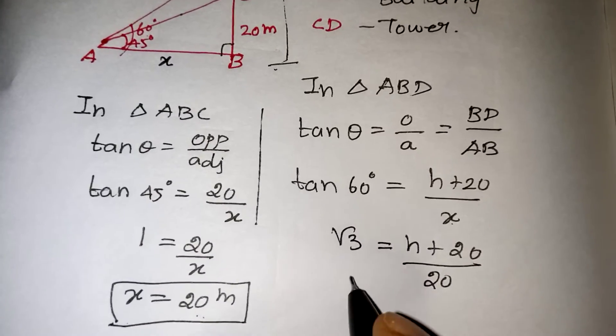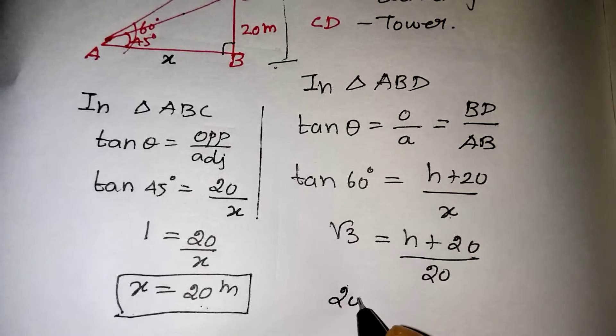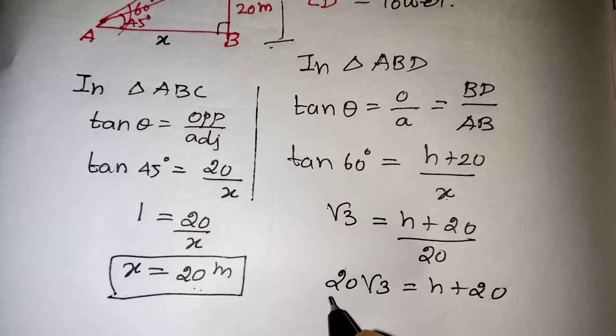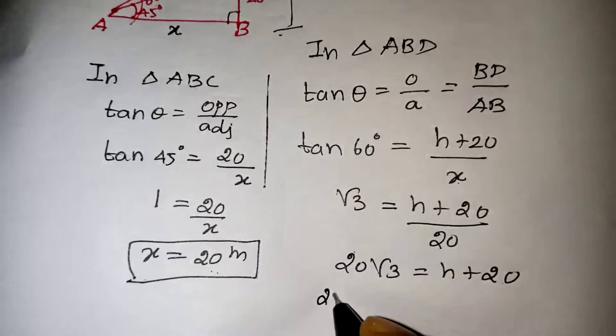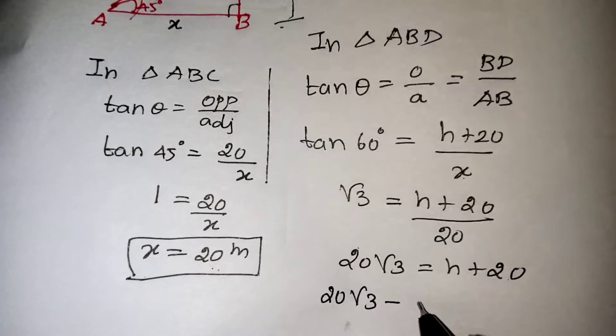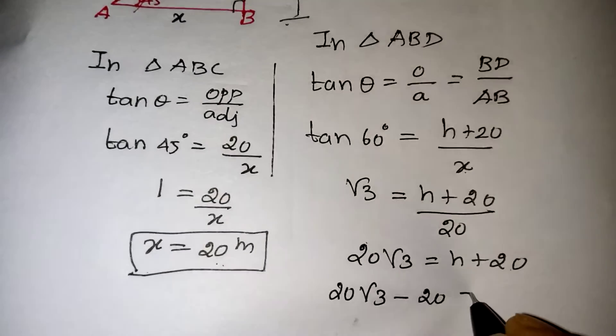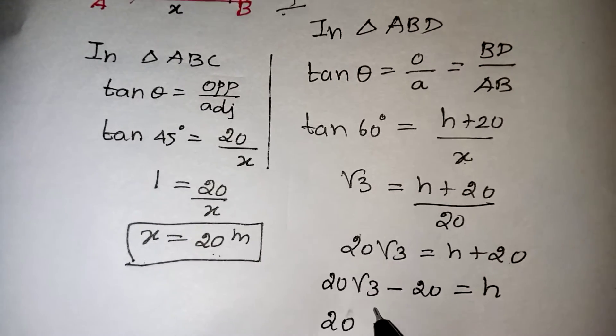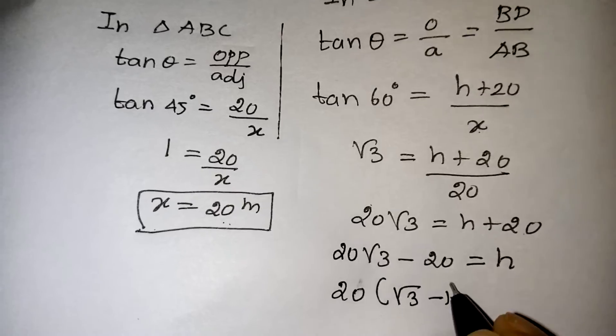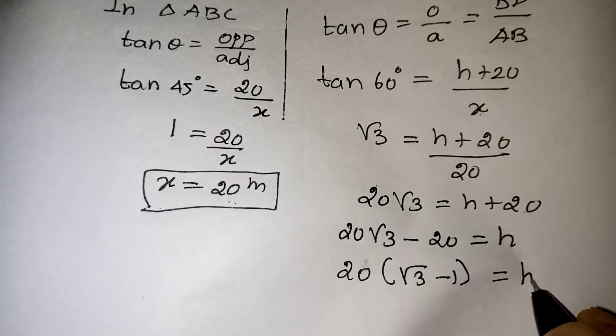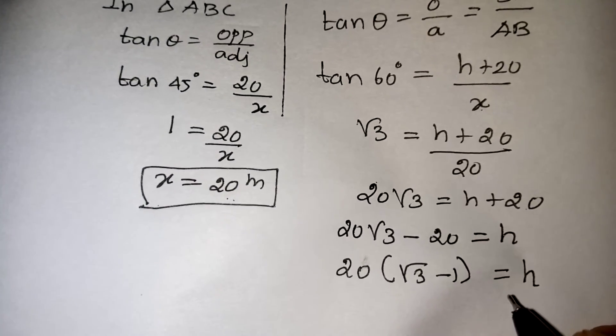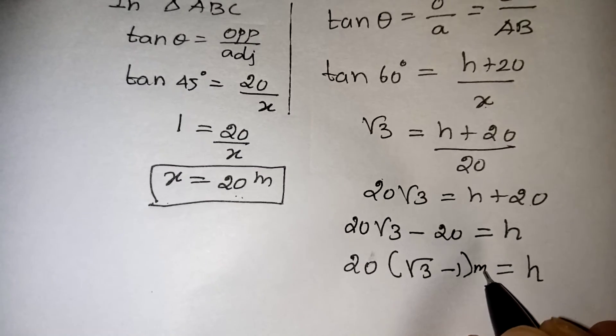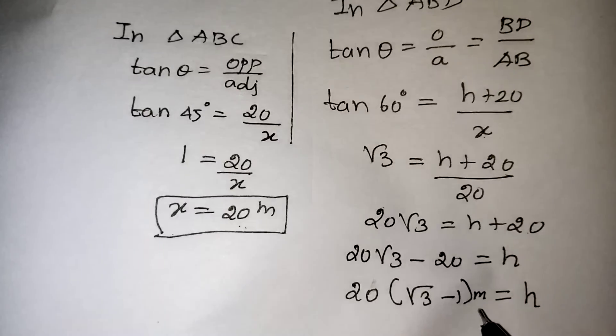Division 20 take it to other side, it will become multiplication. That is 20 root 3 is equal to h plus 20. Now the plus 20 also take it to other side, that will become minus 20. So 20 root 3 minus 20, which is equal to h. From these two what is common? 20 is common. So 20 if we take it out, remaining is root 3 minus 1, which is equal to h. h is nothing but height of the tower. So 20 into root 3 minus 1 meter is the correct transmission tower for the given problem.